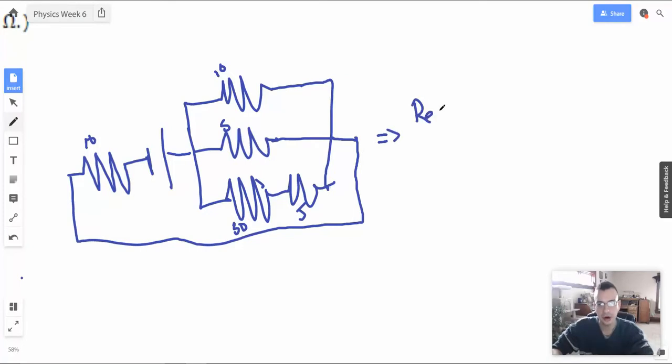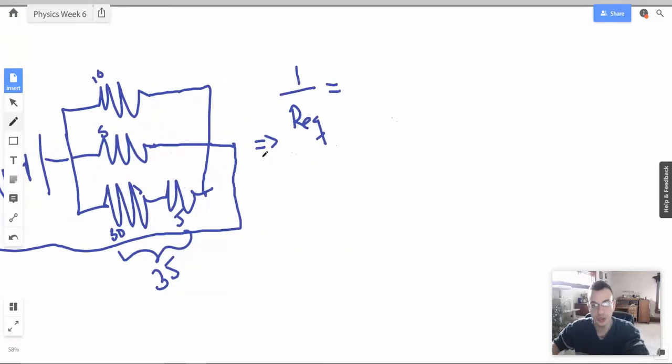So I'm just going to do R equivalent straight off the bat. And then I'm going to do parallel. Well, these guys are in series. Pretty easy to do that math, 15, bam. So I'm not even going to redraw them, redraw that one.